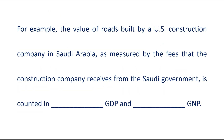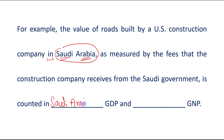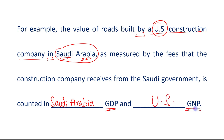For example, the value of roads built by a US construction company in Saudi Arabia — as measured by the fees that the construction company receives from the Saudi government — is counted in Saudi Arabia's GDP and US GNP. The service was provided in Saudi Arabia, so it is counted in Saudi Arabia's GDP. And because US factors of production were used, it is counted in US GNP.